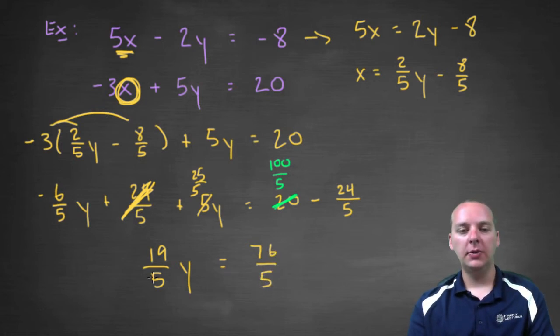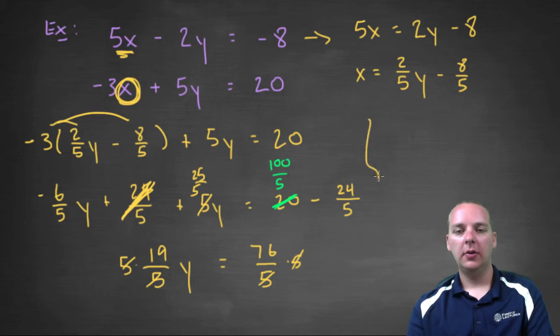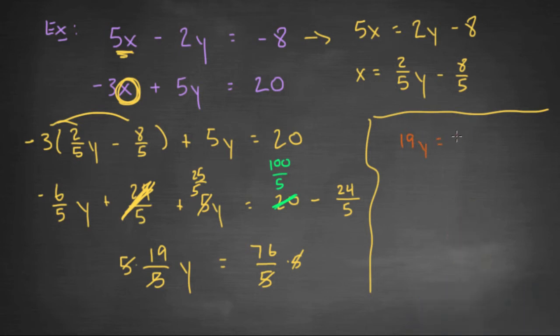Almost done, we can multiply both sides by 5, that'll get rid of the fives. So 19y = 76, so y would be 4. Yeah I believe it would be 4. So y is 4.